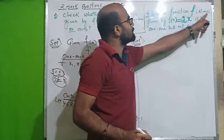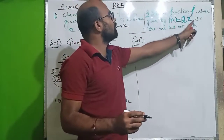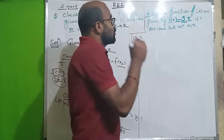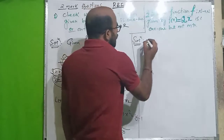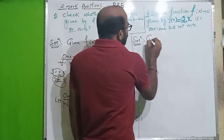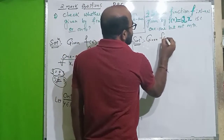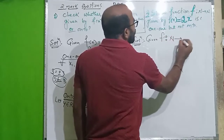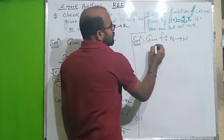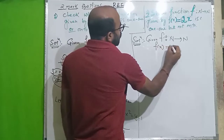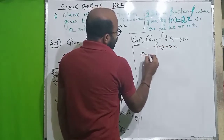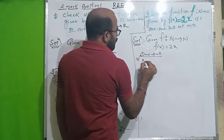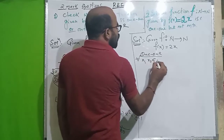Next question: show that the function f maps from N to N given by f of x equal to 2x is one-one but not onto. The mapping is from natural numbers to natural numbers. f of x is 2x. For the one-to-one check, for all x1, x2 belonging to N, assume f of x1 is equal to f of x2.